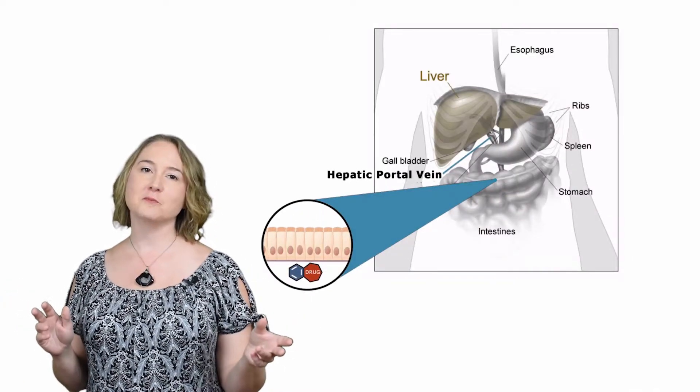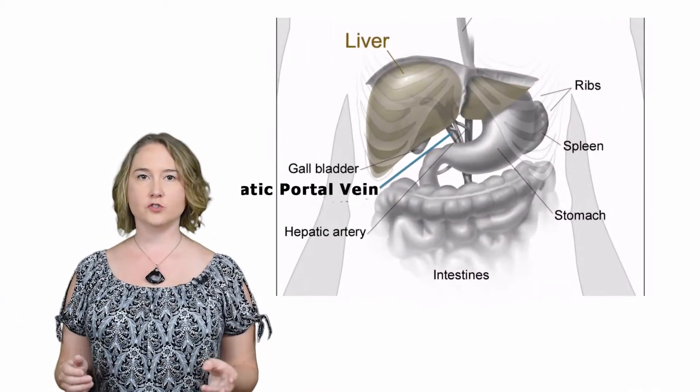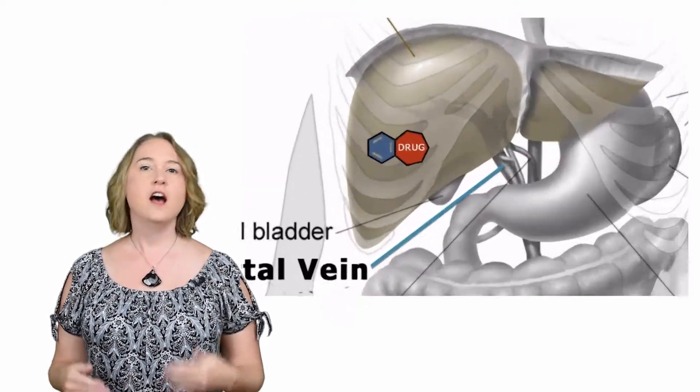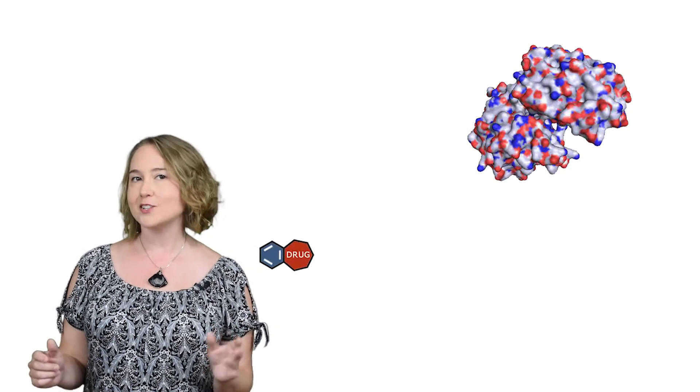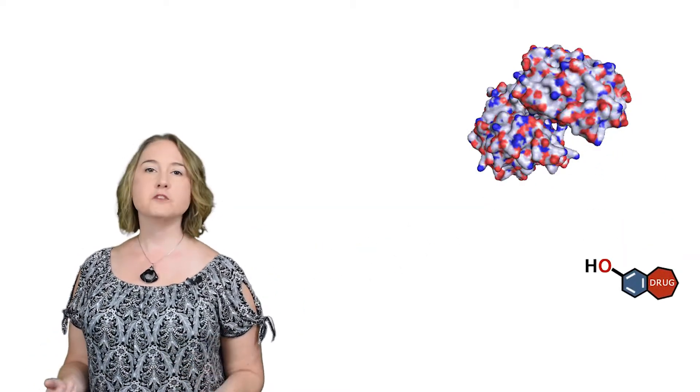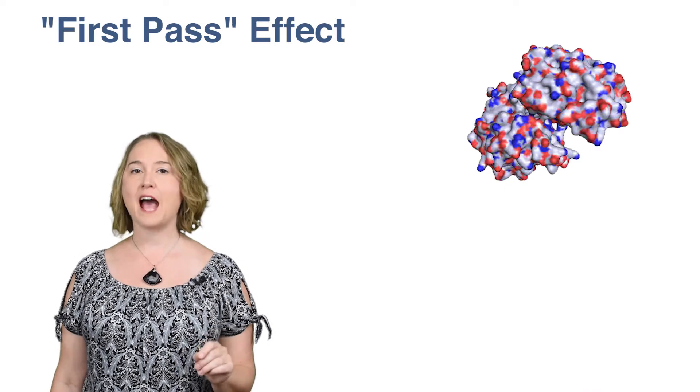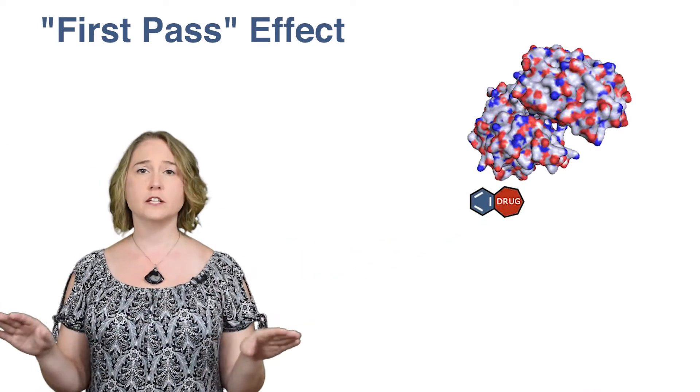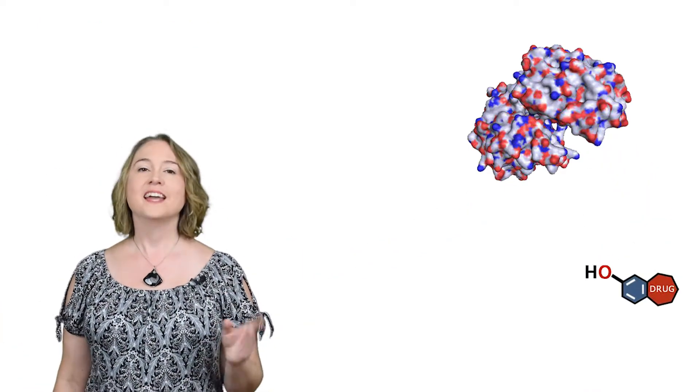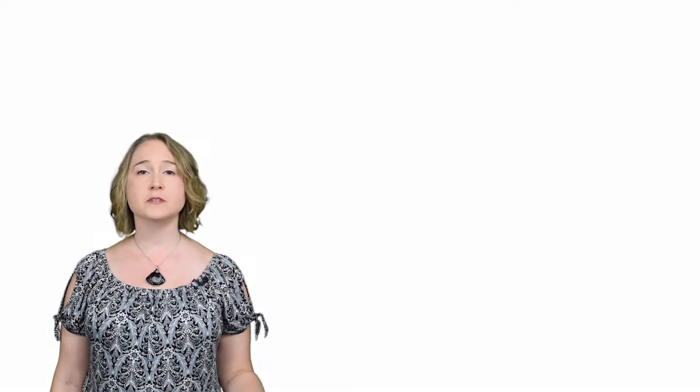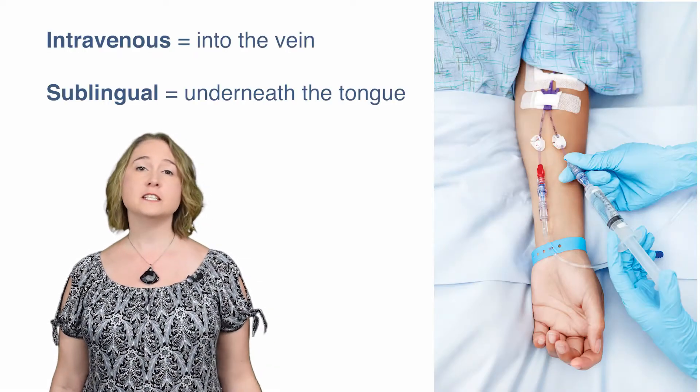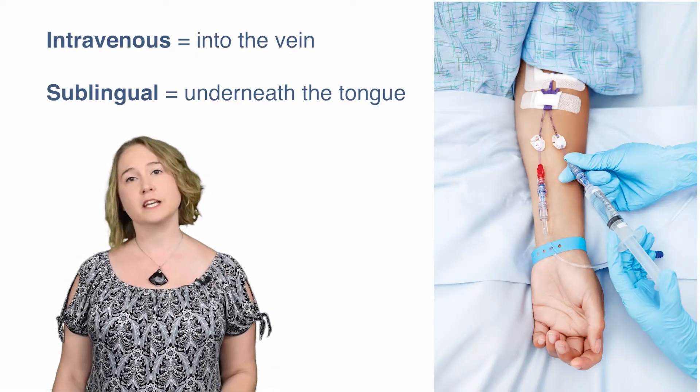Before it can make its way into the bloodstream, an orally administered drug encounters the liver. The liver contains lots of enzymes that can do things like add oxygen atoms onto the molecule. This liver metabolism is called first pass and can sometimes inactivate a drug completely. If this happens, the drug cannot be administered orally and may need to be taken intravenously or sublingually.